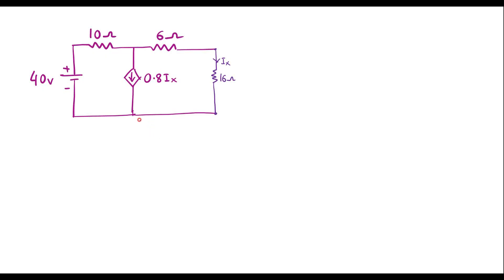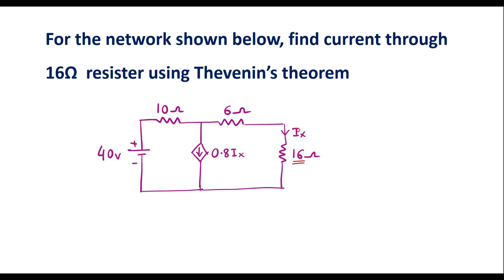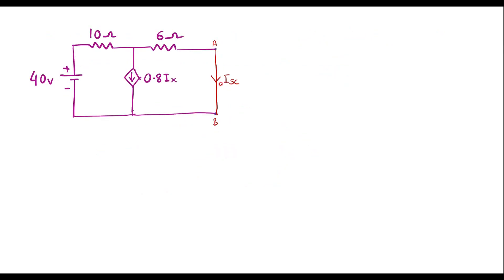Now, to calculate the short circuit current ISC, we take the original circuit where 16 ohm is the load resistor. We remove the 16 ohm and short the two terminals A and B. The current flowing through the short is ISC. In this circuit, there is a current dependent current source dependent on current IX. When the terminals are shorted, IX is nothing but ISC, so the dependent source becomes 0.8 ISC.